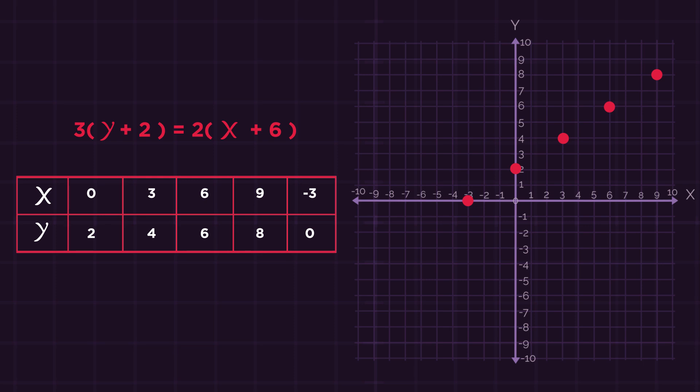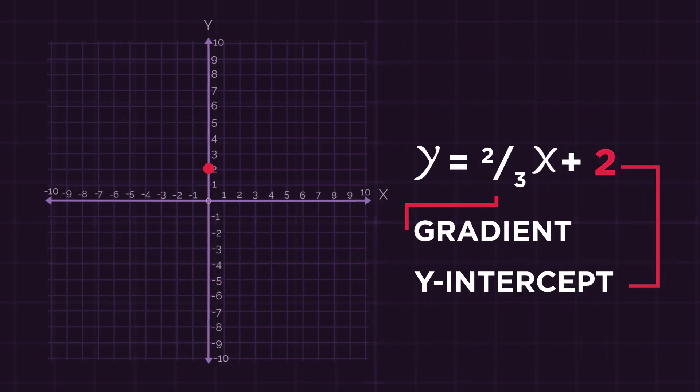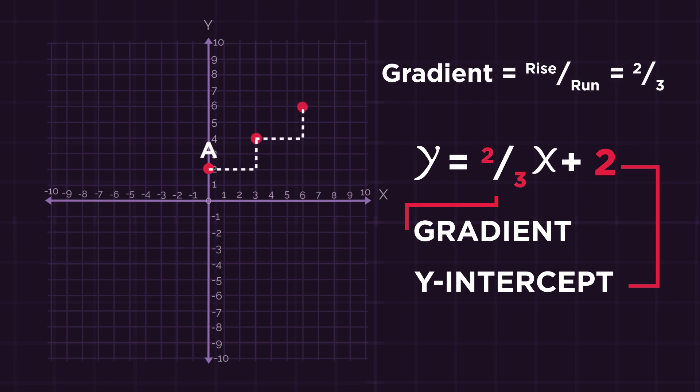Whereas, in this form, we straight away know that the gradient is 2 thirds and the y-intercept is 2. So on our graph, we can start at 2, and then using gradient equals rise over run, we know that for every 3 we go along, we go up 2, much faster.